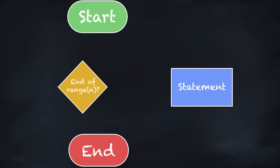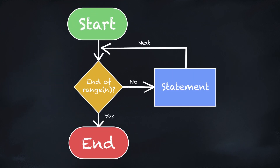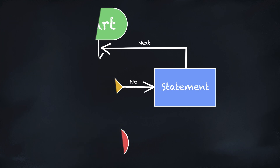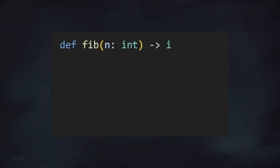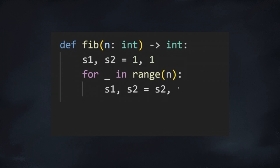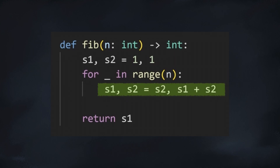To solve this in Python, we simply iterate over n, keeping track of the previous two steps. We define our function Fib with an integer input and integer output. Here we're essentially defining the values for n equals zero and n equals one. Then we iterate over the range of n and update the values each time. Note that this is slightly different from our tabular approach because we only ever need the previous two values — there is no need to build an array to keep track of the results for all n steps.